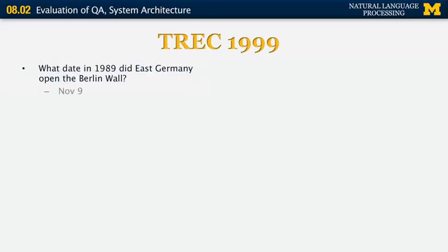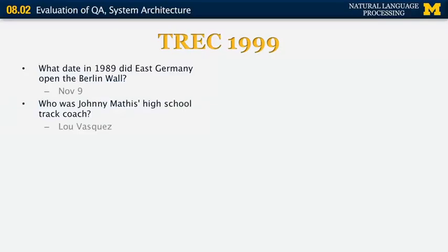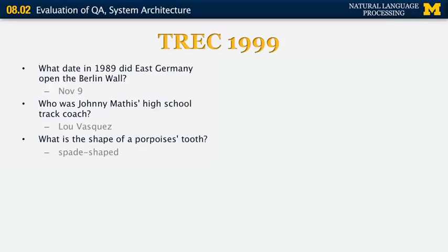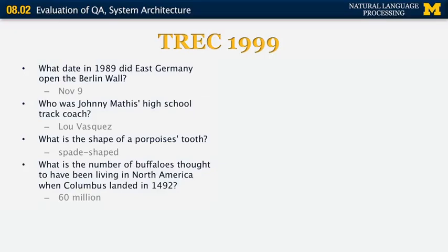Looking at TREC 1999, here are some example questions. 'What date in 1989 did East Germany open the Berlin Wall?' — the answer is November 9th. 'Who was Johnny Mathis' high school track coach?' — a famous question in many papers, answered by Lou Vasquez. 'What is the shape of a porpoise's tooth?' — spade-shaped. As you can see, these are different WH-type questions: who, what, where, when, why, and so on. The answers are very short passages that don't change over time.